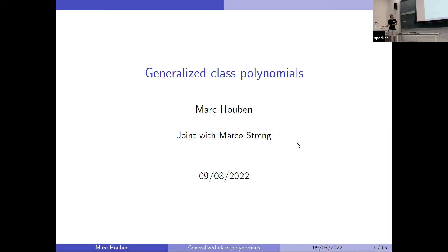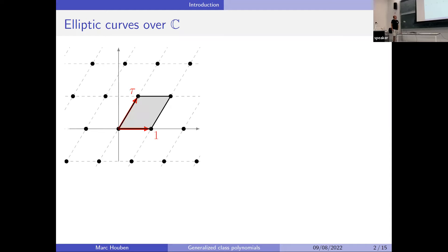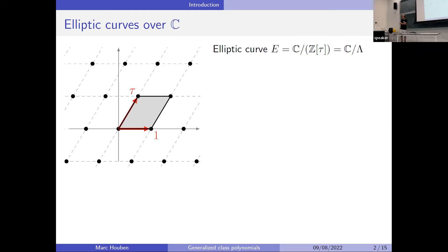This begins with elliptic curves over the complex numbers. If I have a lattice in the complex numbers spanned by 1 and tau in the upper half-plane, then I can make an elliptic curve by taking the quotient of ℂ by this lattice, and every elliptic curve over the complex numbers is isomorphic, at least as a complex analytic object, to one of these.